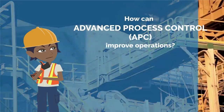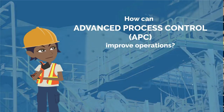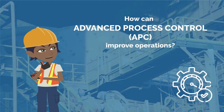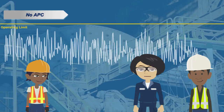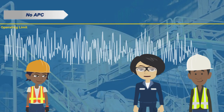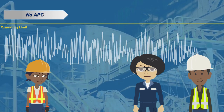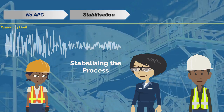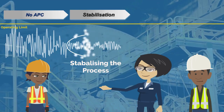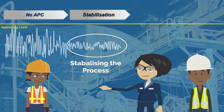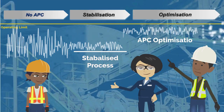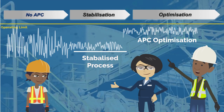How can advanced process control improve operations? APC is a control and optimization technology. We use this technology to optimize a process. First we stabilize the process, and then we move the process to a new profitable operating point.